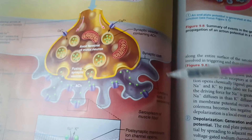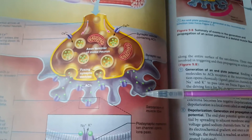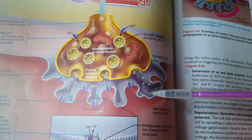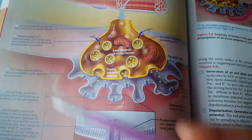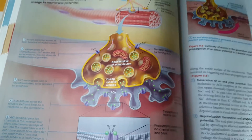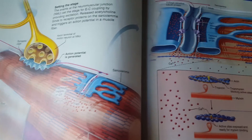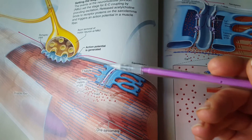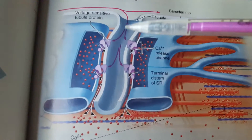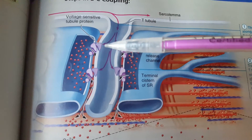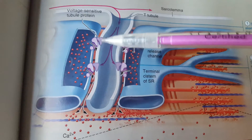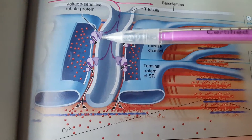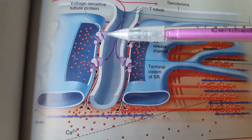Remember that the sarcolemma is the name for the membrane of the skeletal muscle fiber. An electrical impulse will then travel throughout the membrane and down into the transverse tubules. As it travels down into the transverse tubules, that electrical impulse is going to change the shape of voltage-sensitive proteins embedded in the transverse tubule.